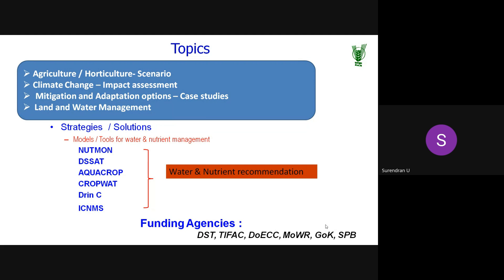What I wish to cover today is the scenario of agriculture and horticulture in India and how climate change is affecting it. There is no need to doubt whether the climate is changing because of the extreme events we are facing — floods, droughts, extreme rainfall events, and landslides. I will also present case studies and strategies, especially with respect to decision support systems that are commonly available, most of them free and open source.